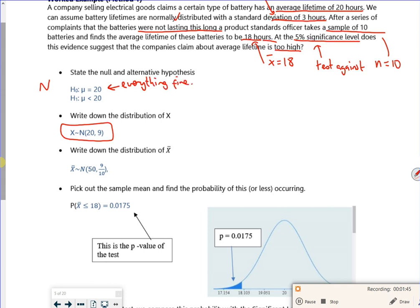So this is me, I'm in charge of the company, I'm saying you're having a laugh, you're not sending these batteries back, everything is fine. So then I have the alternate hypothesis, and that's to say that actually the mean is less than 20. So this is the person complaining, saying actually your batteries are rubbish.